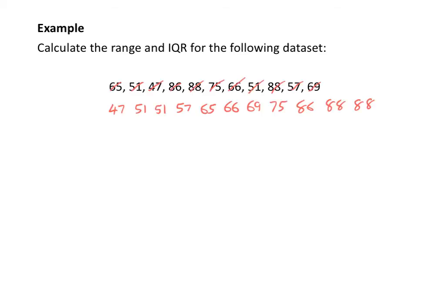Now that I have the numbers arranged into ascending order, I can start by calculating my range. Range is going to equal my maximum score minus my minimum score. Using the numbers arranged in ascending order, my maximum score is 88 and my minimum score is 47. So that is 88 minus 47, which equals 41. So the range of my data set is 41.